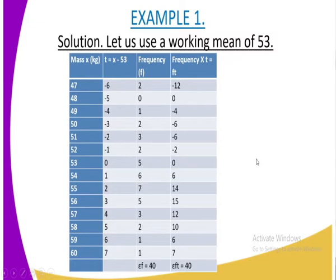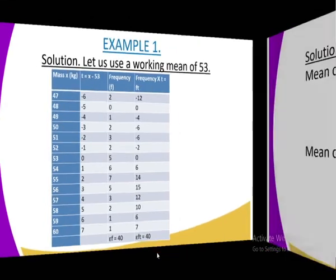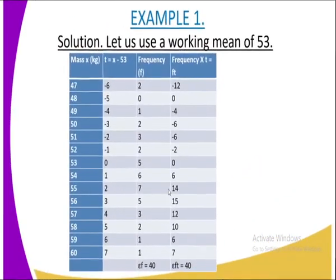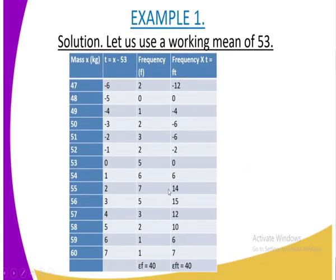And then we have got another column whereby we are going to get your frequency, which is f, we multiply by our t. So that is, we are getting f times t. So now we are getting negative 6, we multiply by 2 to get negative 12. We also get negative 5, which is our t, and our f is 0 to get 0. And you multiply until the last value whereby we are having 7, you multiply by 1 to get 7. And still we also get the summation.